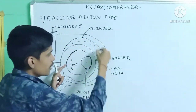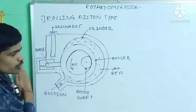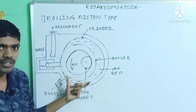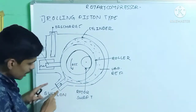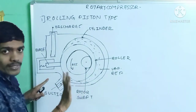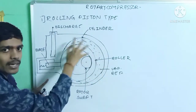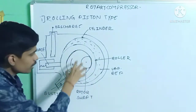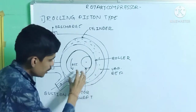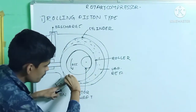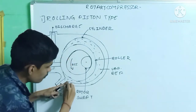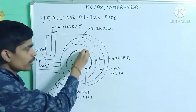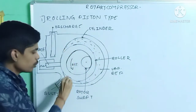The blade moves in and out as the roller rotates. There are generally four cases, but one figure is explained here. When the suction stroke is completed, vapor refrigerant is inside the cylinder. As the roller starts rotating, the blade moves and whatever vapor refrigerant is ahead of the roller gets compressed because there is a small annular space between the cylinder and the roller.